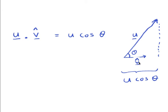v-hat is a unit vector there. If I take a dot product between the vector u and the unit vector pointing along this direction, that gives me the projection of u along that direction: u cos of the angle between the unit vector and u. So u dot v-hat equals u cos theta — that is simply the projection of u along another direction.